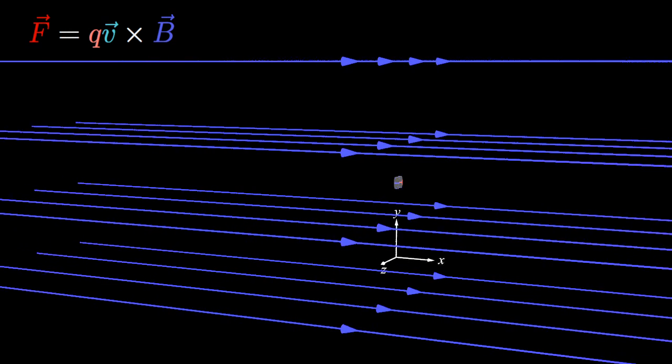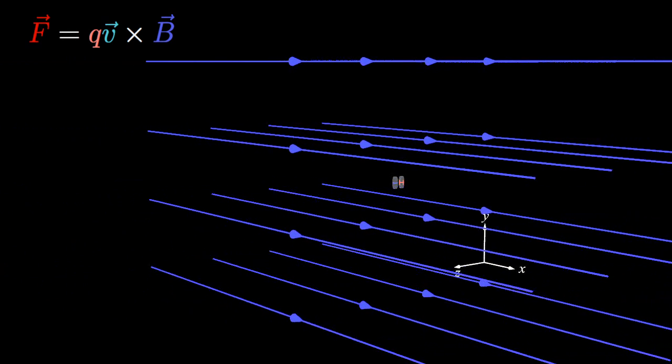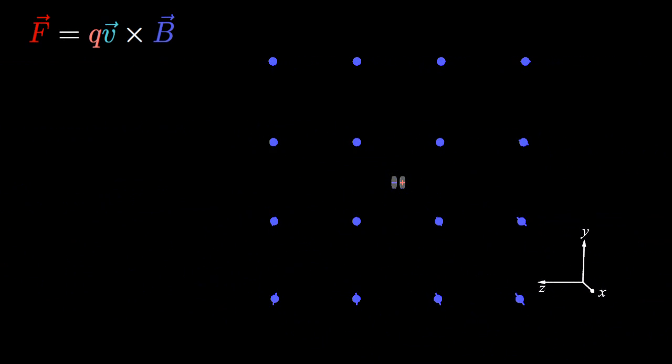We will start with the special case where the initial motion is perpendicular to the magnetic field. In this case, the resulting motion will be confined to a plane perpendicular to the field.